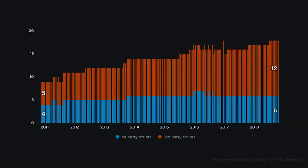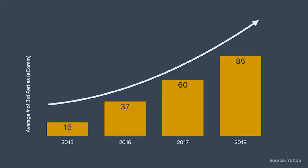Looking at just e-commerce as an industry, Yotta did a study and in 2015 they had 15 third parties; last year it was up to 85. The trouble is everyone's saying 'can I bring a plus one to the party?' You include just one script and they bring in other people — all these different third parties come along. So you're dealing with fourth, fifth, and sixth parties, and it all gets a bit out of hand.